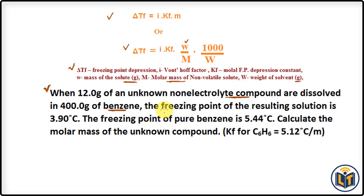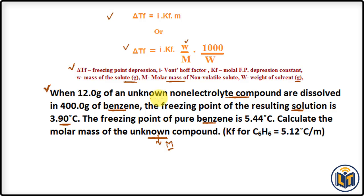The freezing point of the resulting solution is 3.90°C. The freezing point of the pure solvent benzene is 5.44°C. We are asked to calculate the molar mass of the unknown compound, meaning we need to find the molar mass M of the solute.